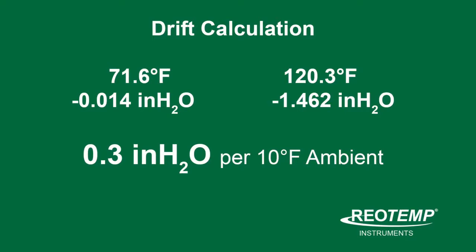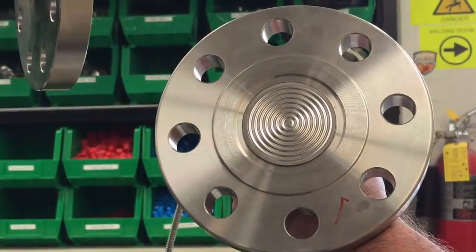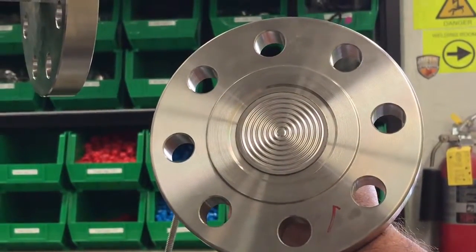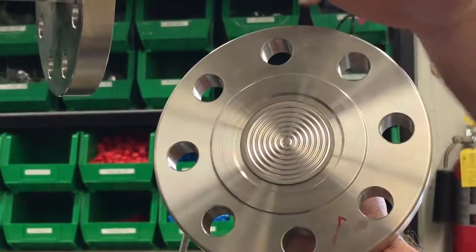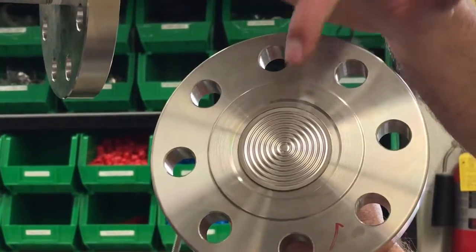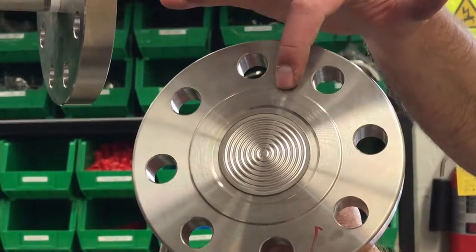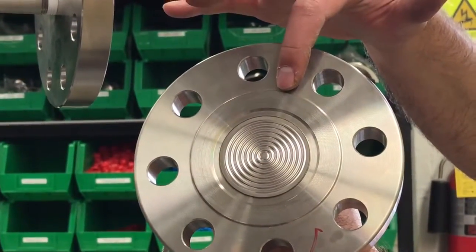The best way to combat this drift is to increase diaphragm size, which not only adds sensitivity to the assembly, but also helps eliminate pressure drift due to temperature fluctuation. Unfortunately, a flush face seal only allows you a limited area to fit both the diaphragm and the raised face gasket surface.